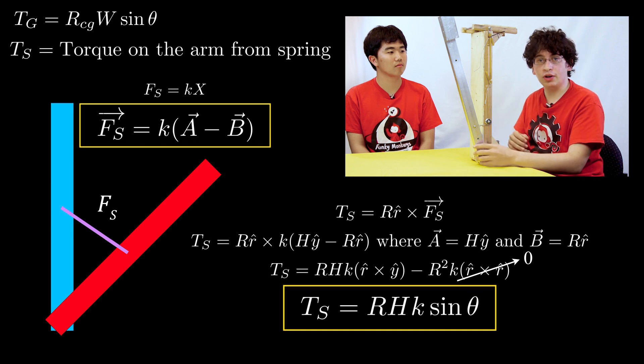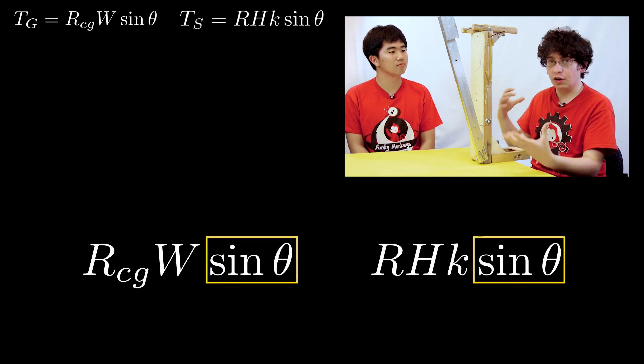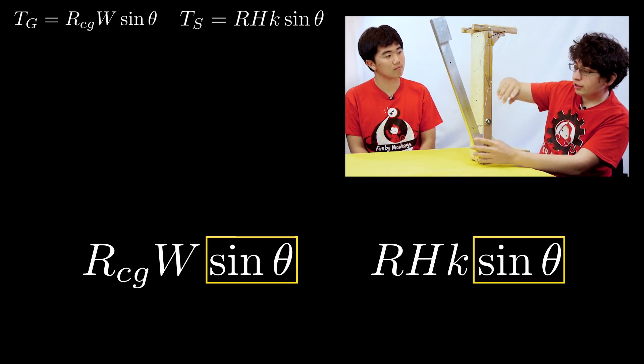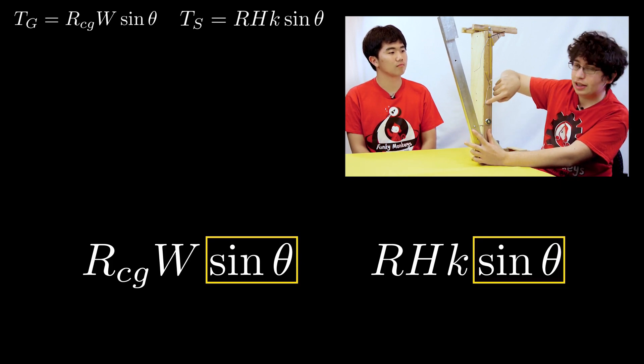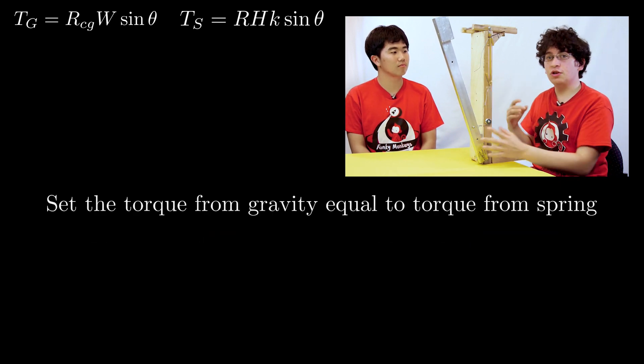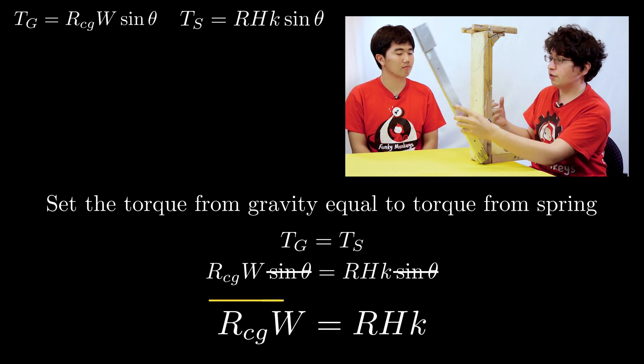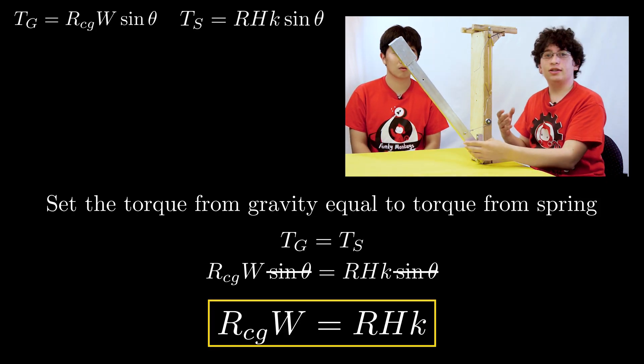Now you'll notice both of these equations both follow a sine curve with sine of the angle between the arm and this vertical support here. So that means that if you get the constants on either side of the equation to equal each other, then you get this effect which is the arm balances at all points.